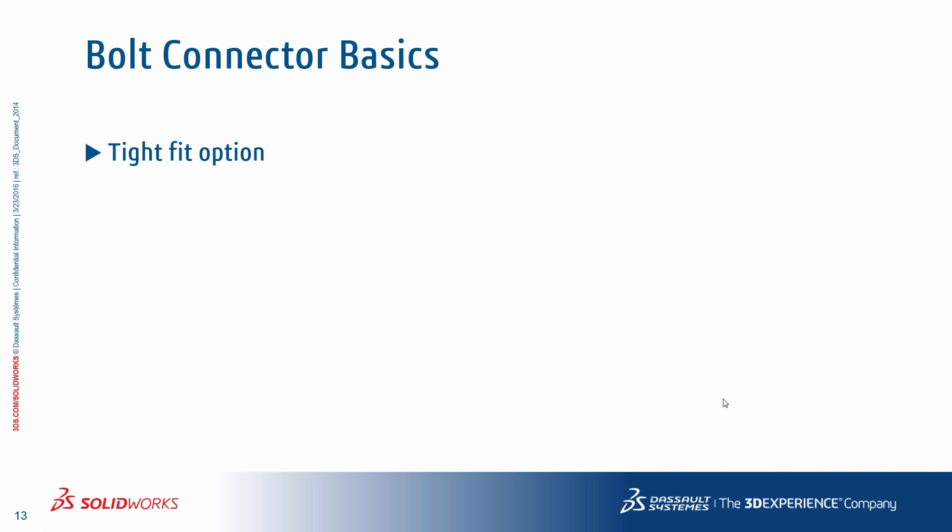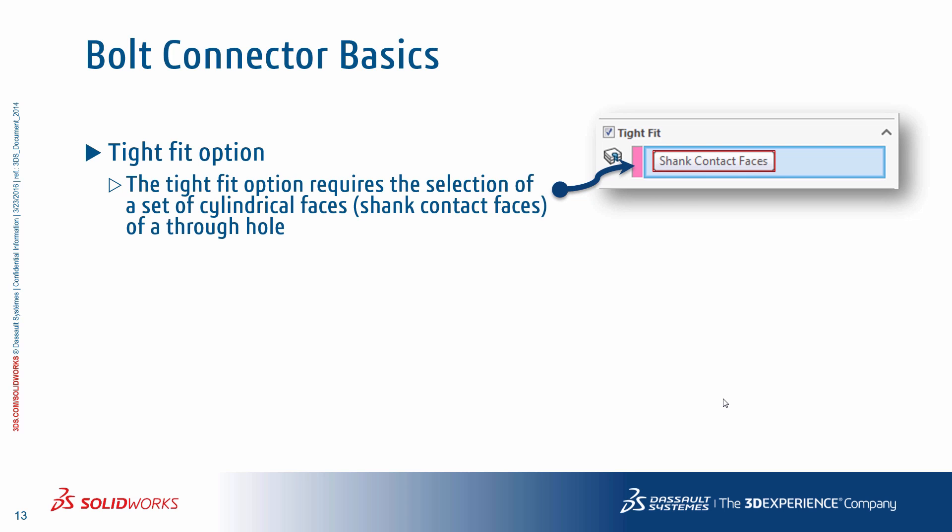There are several additional options available as part of the bolt connector definition. One of them is the tight fit option, which essentially creates a rigid connection between the outer faces and the through holes selected. It's available across all bolt types and requires a selection of cylindrical faces of the through holes the bolt shank comes in contact with. These through holes must be coaxial; they can be from different parts and can have a different radius, however if the through holes are from the same part the radius values have to be exactly the same.